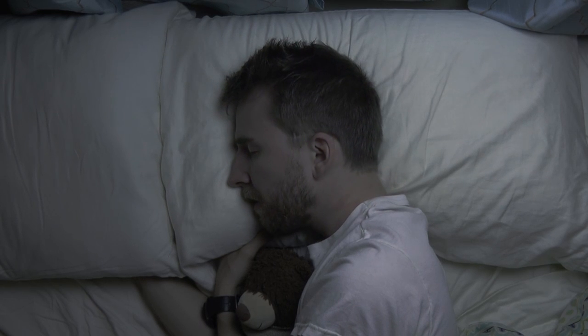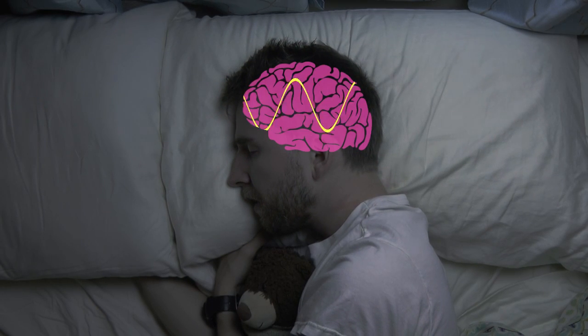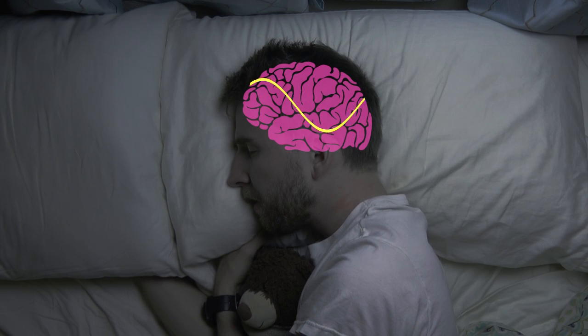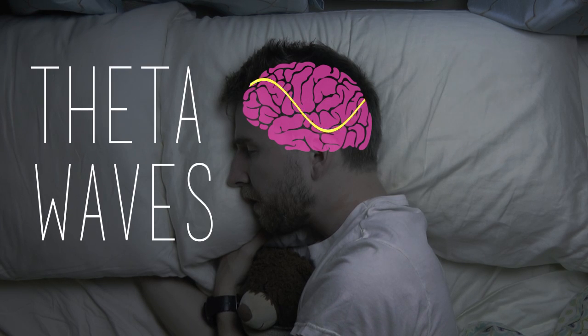When you first lay down in bed and try to fall asleep, your brain creates fast alpha waves, which are associated with relaxation. Once you finish counting sheep and you start to doze off, your brain waves slow down. These are called theta waves, and they're important for learning and memory.